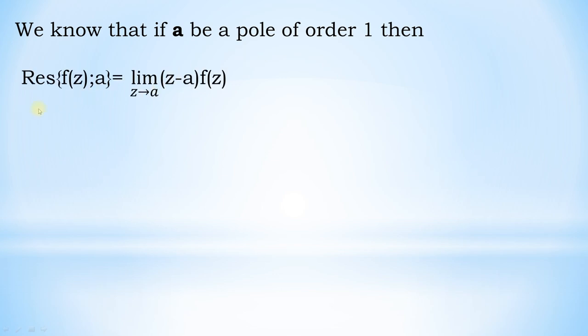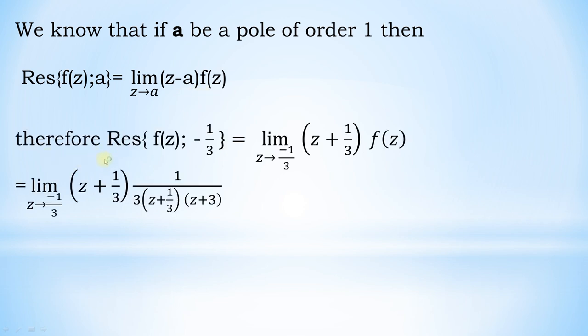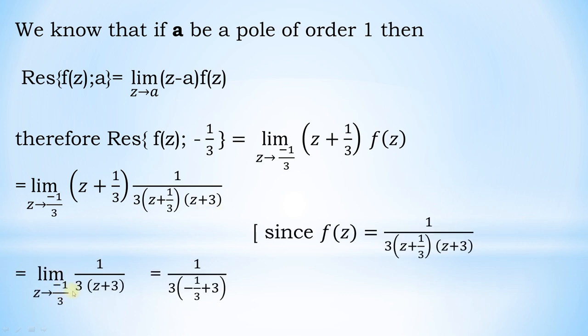For a simple pole at a, the residue of f(z) equals lim_{z→a} (z − a)·f(z). So the residue of f(z) at z = −1/3 equals lim_{z→−1/3} (z + 1/3) · 1/(3(z + 1/3)(z + 3)) = lim_{z→−1/3} 1/(3(z + 3)) = 1/(3(−1/3 + 3)) = 1/(3 · 8/3) = 1/8.